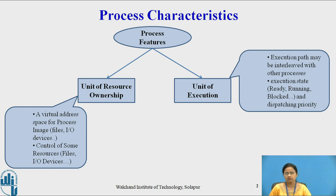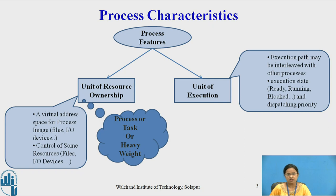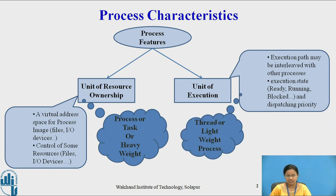In unit of execution, the execution path may be interleaved with other processes. The execution states in this case are ready, running, or blocked, and it contains some dispatching priority. The unit of resource ownership is also called a process or task, or it is also called a heavy-weight process, while unit of execution is also called a thread or light-weight process.